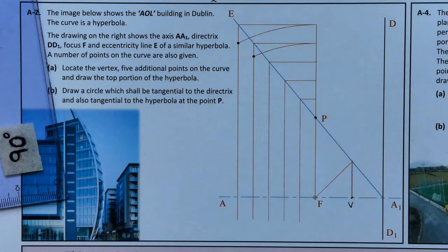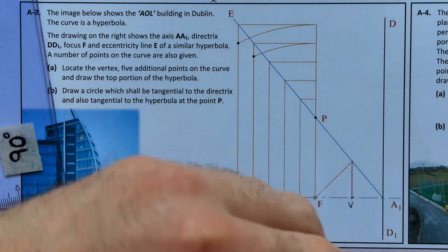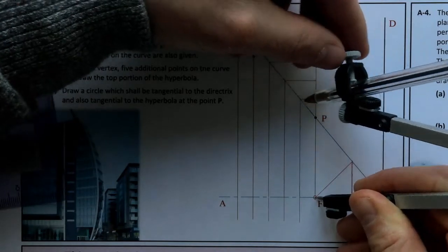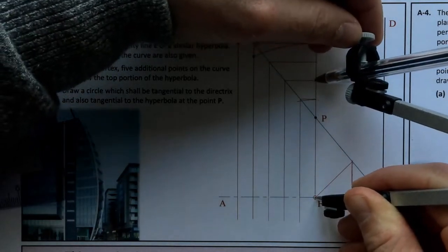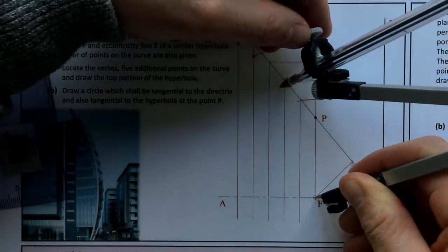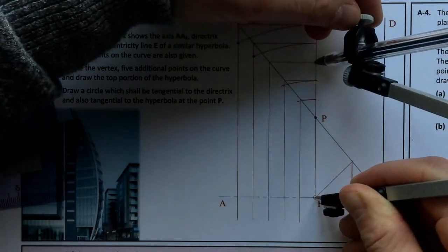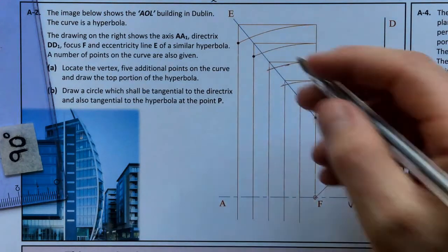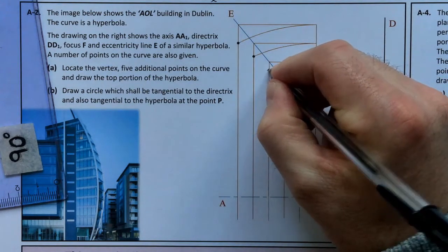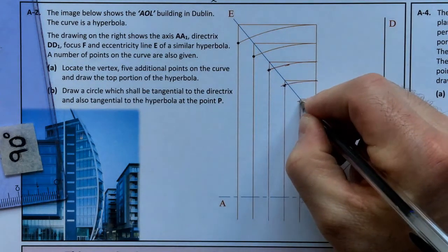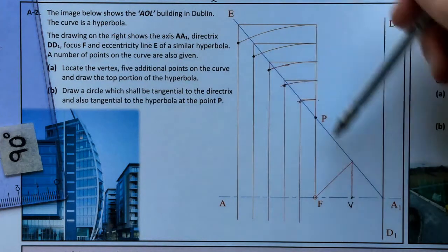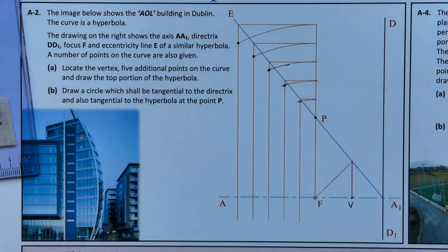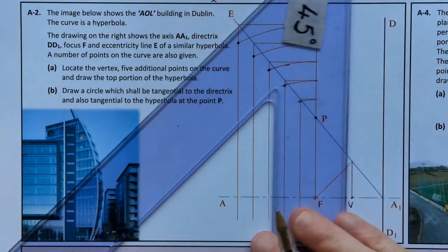So that's four points. I'll locate the vertex — put my compass point on the focus, and where it hits the focal line I swing an arc. Swing an arc again — that gives me my second point. Swing another arc. Where the arc cuts the lines going down helps locate points on our curve. So I've found one, two, three — plus the ones given — four.